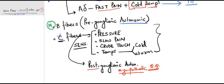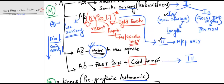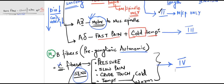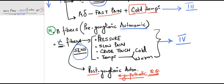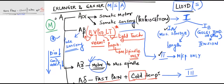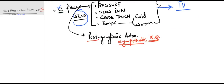Since C sensory fibers are sensory, they are classified in the Lloyd system as Type 4 fibers. So overall, in the Erlanger-Gasser system you have Type A, B, and C fibers; in the Lloyd system you have Types 1, 2, 3, and 4. The Lloyd system caters only to sensory fibers, while the Erlanger-Gasser system covers motor, sensory, and autonomic fibers. I hope you liked this video — do like, share, and subscribe. Thank you.